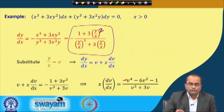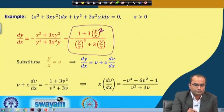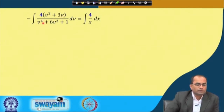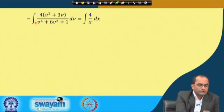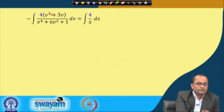This is now separable. We take the v-terms to the left and dx/x to the right. Multiplying both sides by 4, we notice that the derivative of v⁴ + 6v² + 1 is 4v³ + 12v, and 4(v³ + 3v) = 4v³ + 12v is exactly the numerator needed. So we can set up the integral: ∫(4v³ + 12v)/(v⁴ + 6v² + 1) dv = −∫4/x dx.